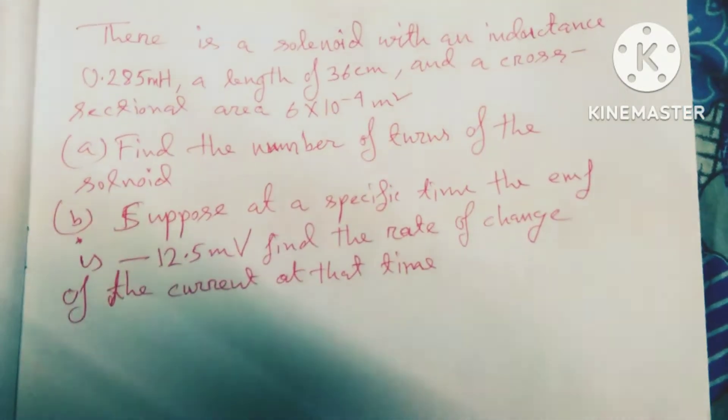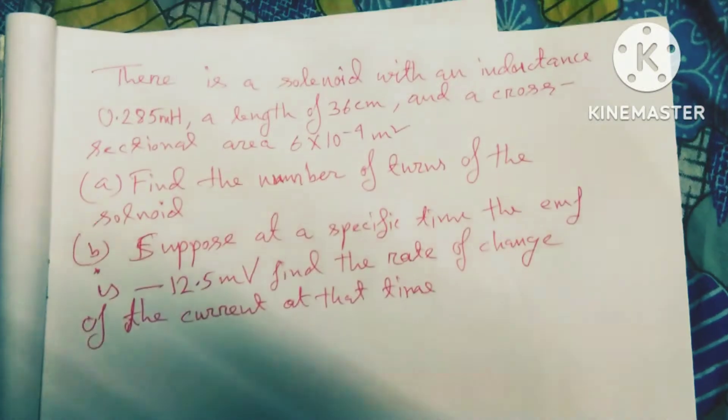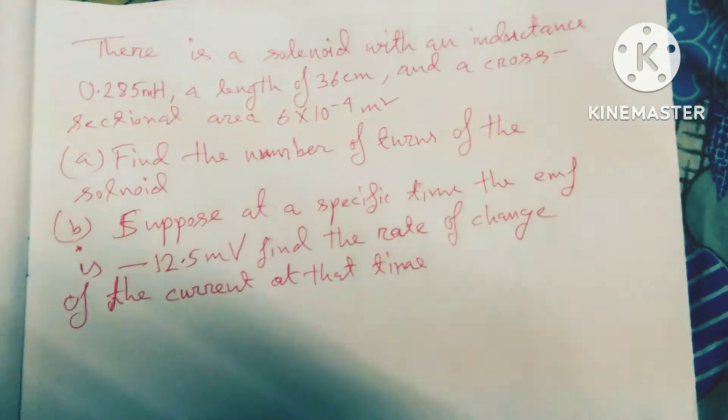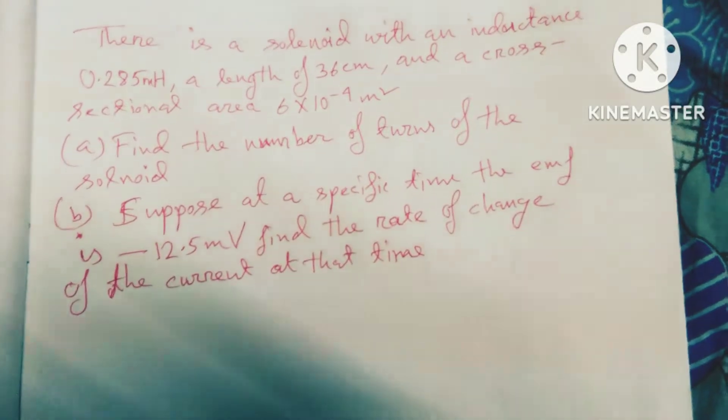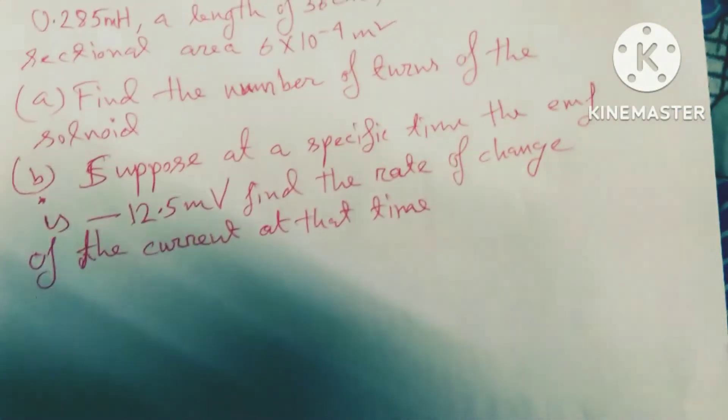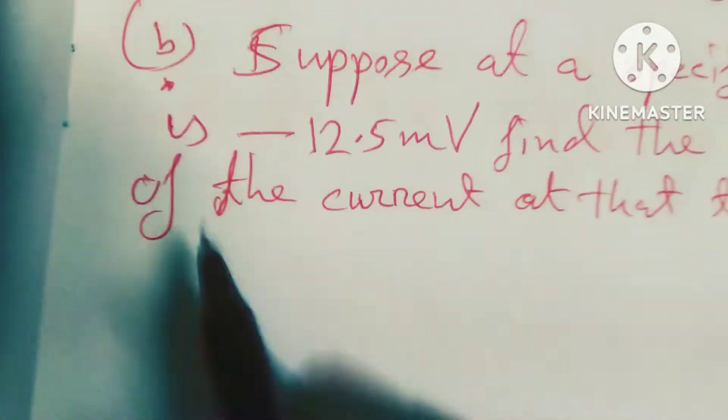Part (a): Find the number of turns of the solenoid. Part (b): Suppose at a specific time the EMF is 12.5 millivolts. Find the rate of change of the current at that time.